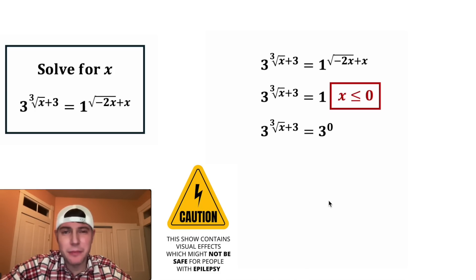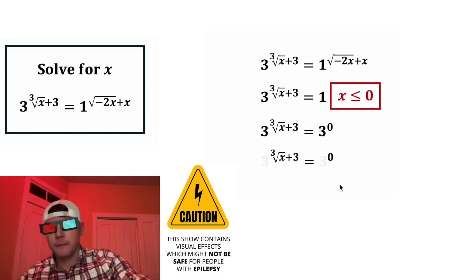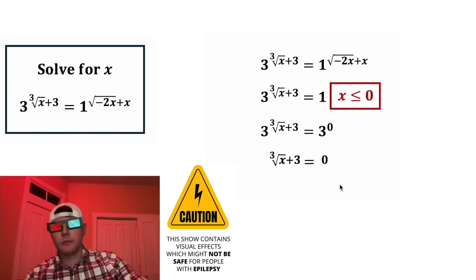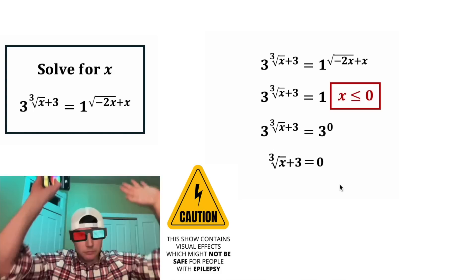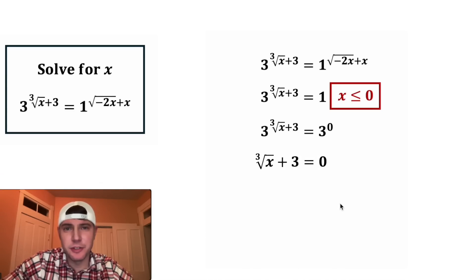So now both sides of the equation have a base of 3. The only way this is true is if we set the exponents equal to each other. Or in other words, drop the base. Drop, drop the base.